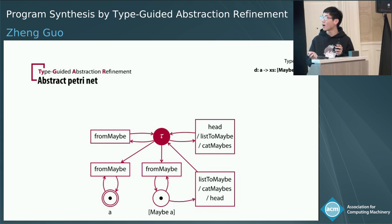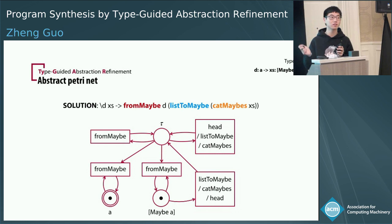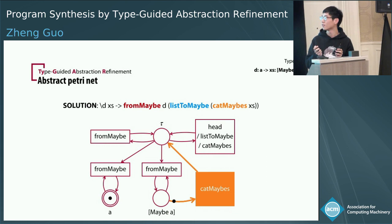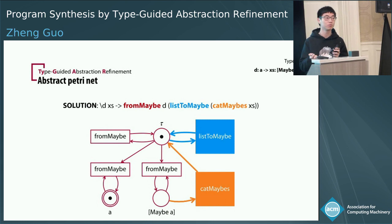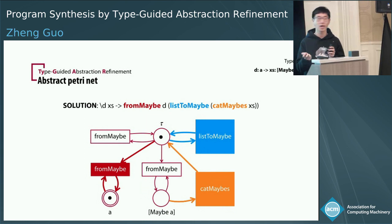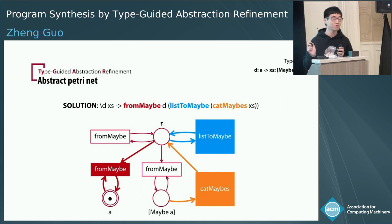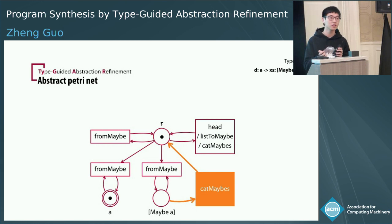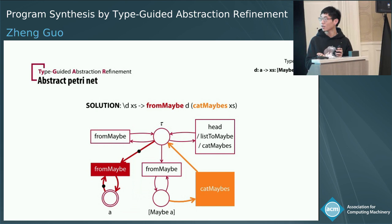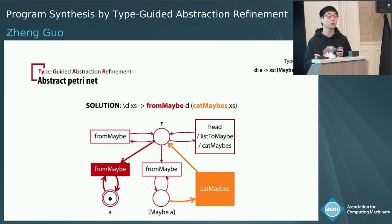By firing the transition catMaybes we produce one new token into tau. Next we consume the token in tau, fire list2maybe, and produce back one token. Then we fire the transition fromMaybe by consuming tokens in tau and A and produce back one token into A, finding a path. But does this solve all problems? If you are familiar with Petri Nets, you'll find there is actually a shorter path: after firing catMaybes to get one token in tau, you can directly fire fromMaybe. By consuming those tokens you produce one into A — giving another solution: fromMaybe (catMaybes xs). Is this a valid solution? Actually it's not, because it does not type-check against our type query.